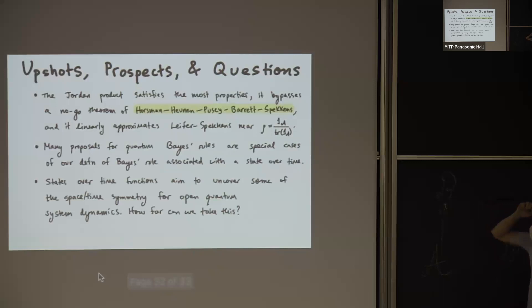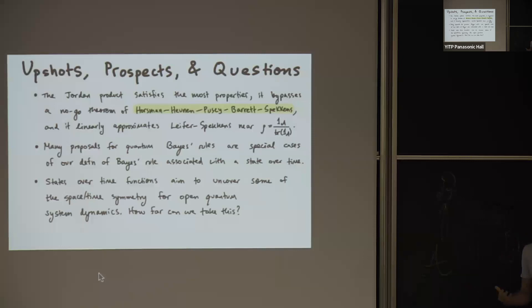So part of the, you know, some things I didn't get a chance to explain, but state over time functions sort of aim to uncover some of the space-time symmetry for open quantum system dynamics. And we're very curious about seeing how far we can address this in particular information measures associated to these objects. So thank you for your time. And let me know if you have any questions, please.